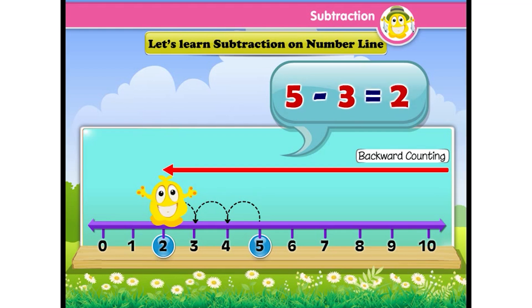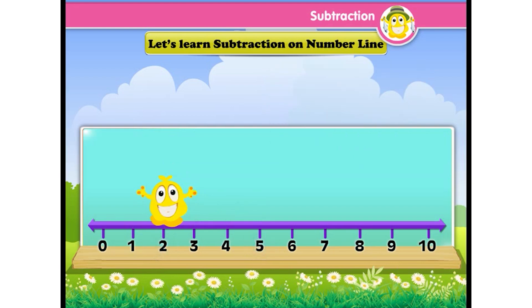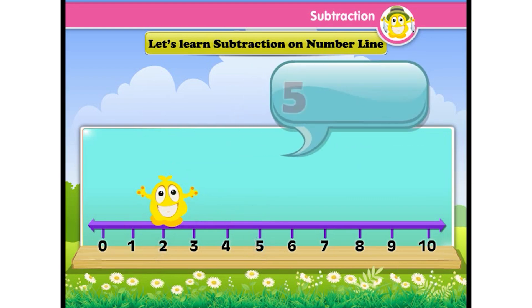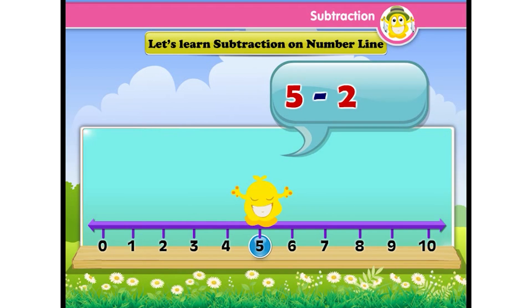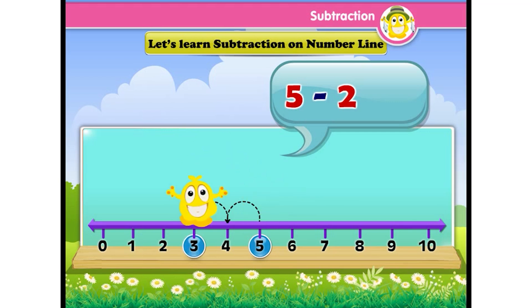Naughty Popcorn loves hop and skip, so he wants to do more. Now he is subtracting five minus two. He will jump on five, then skip two steps backward and land on three, which is the answer. So five minus two is three.